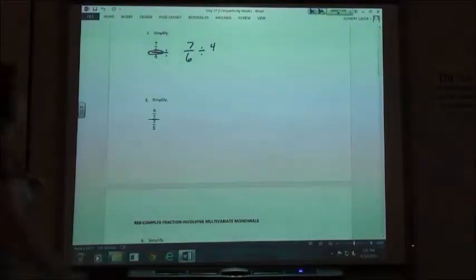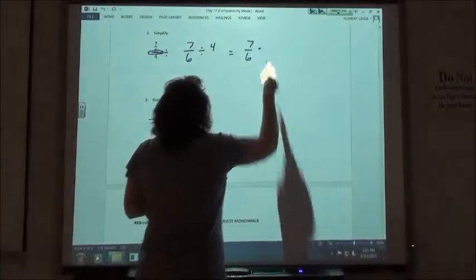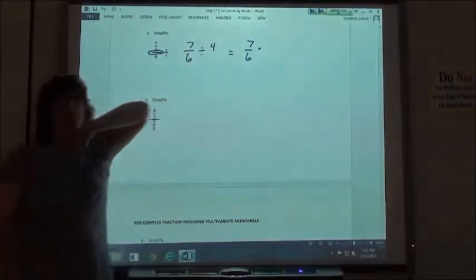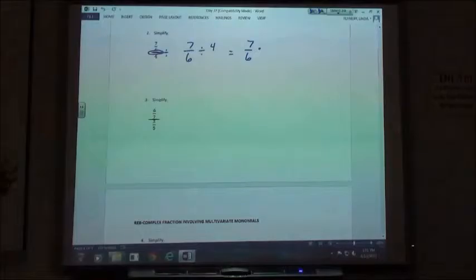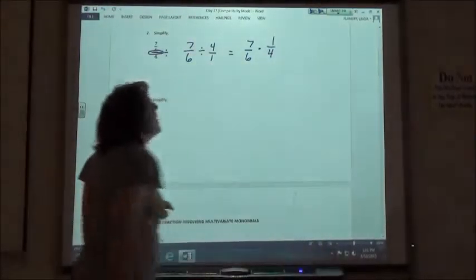Since I'm dividing, I have to invert that second fraction and multiply, so I'm going to make it 7 6ths times. And what's the reciprocal of 4? 4 over 1. This is 4 over 1, so the reciprocal would be 1 over 4 when I flip it upside down.